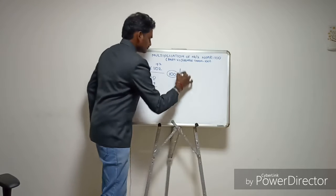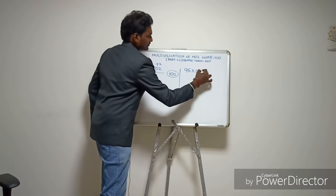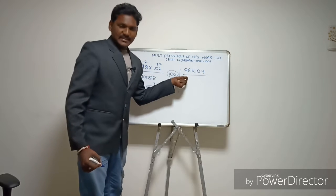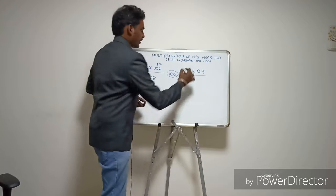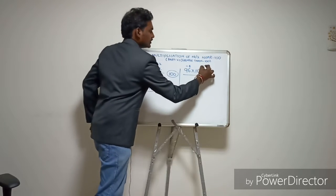Let's take another example: 96 into 109. 96 is 4 less than 100, and 109 is 9 more than 100.